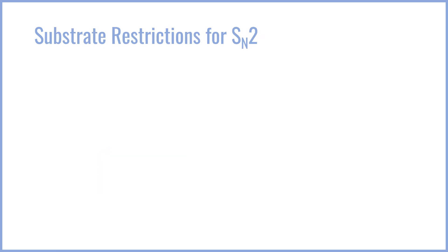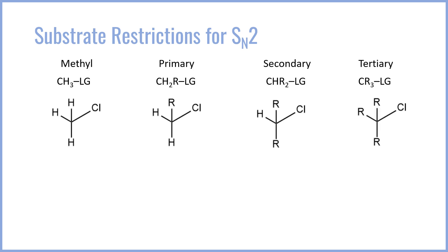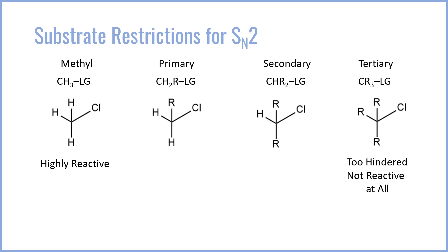Because of this, the SN2 reaction has pretty clear-cut substrate restrictions. Consider our four main substrates: methyl, primary, secondary, or tertiary — essentially telling you how many non-C–H bonds the carbon has in addition to the leaving group. A methyl substrate has only the C-leaving group bond, while a tertiary substrate has three carbon-carbon bonds in addition to it, meaning a lot more crowding. On the methyl substrate, we have very little crowding, so it is very reactive towards SN2. A tertiary species, on the other hand, is so crowded that it's too hindered to react at all via SN2 — tertiary substrates do not react via SN2 pathways.